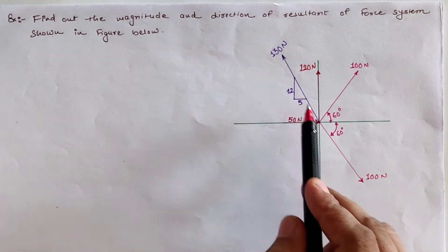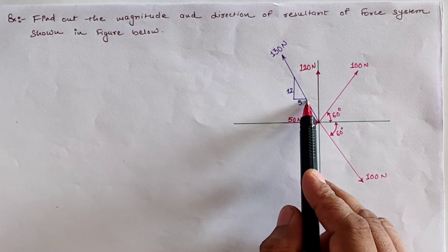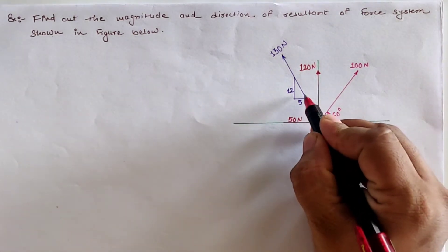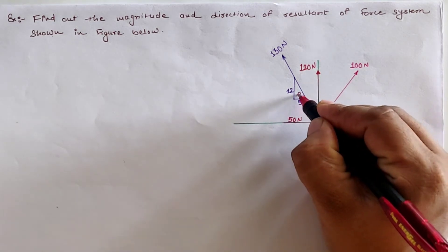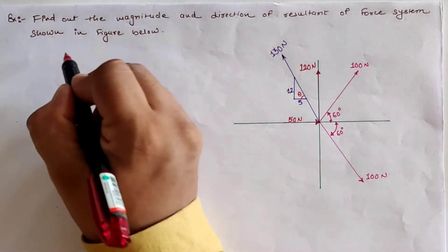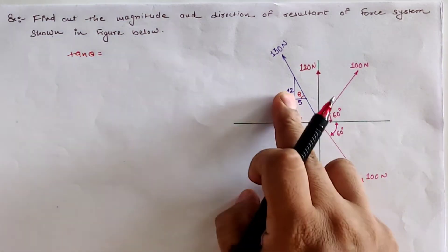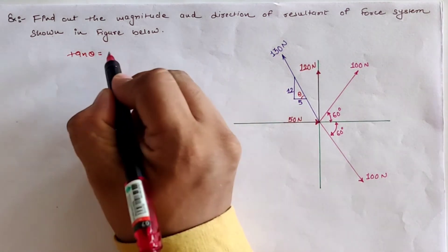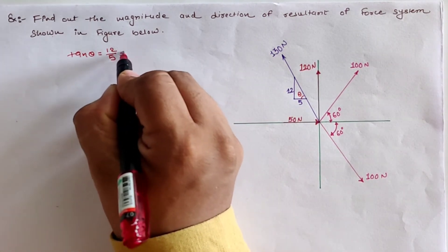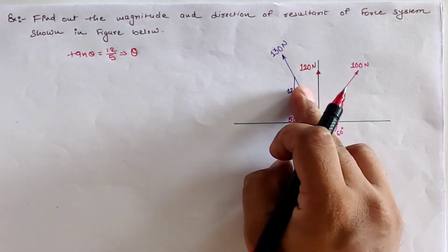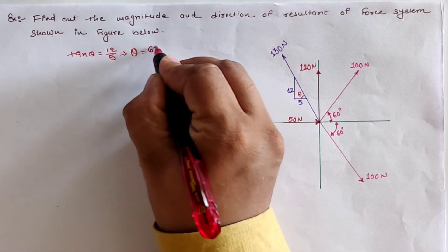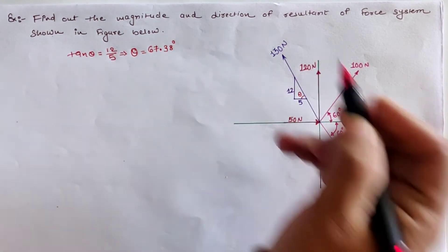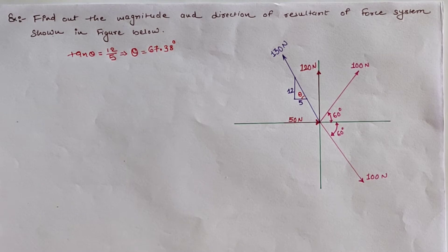First, we have to find the angle of the 130 newton load with the horizontal. Assuming the angle between this 130 newton load and the horizontal axis is theta, and applying the tan theta rule: tan theta equals opposite side divided by adjacent side, which is 12 divided by 5. Solving this, the angle between the 130 newton load and the negative horizontal axis is 67.38 degrees.